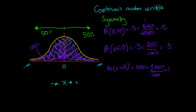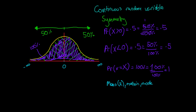Our next important property is our measures of central tendency. So if we remember, our measures of central tendency are our mean — which we often write as x-bar — our median, and our mode. For the normal distribution, the mean, median, and mode all occur in the same spot, and they all occur at this centre point here. So your mean is here, your median is here, and your mode is also here. There are reasons why this occurs, but for our purposes we just need to know that they're there.